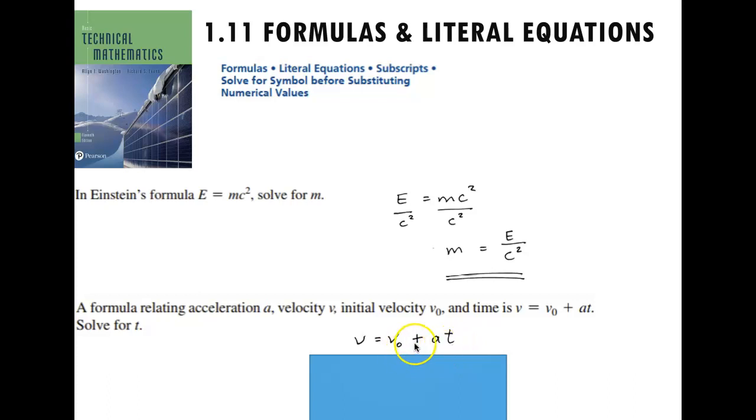So the first thing we have to do is move this v sub nought to the left. So since it's added on, we're going to subtract. And then we're left with a times t. So to undo multiplication, we divide. So that's what our work looks like. v minus v sub nought equals at. And then we're going to divide both sides by a. So our final answer is v minus v sub nought all divided by a equals t.